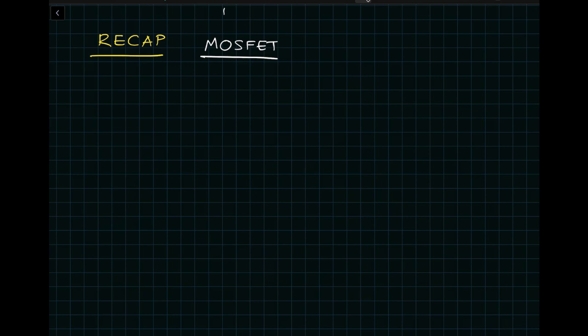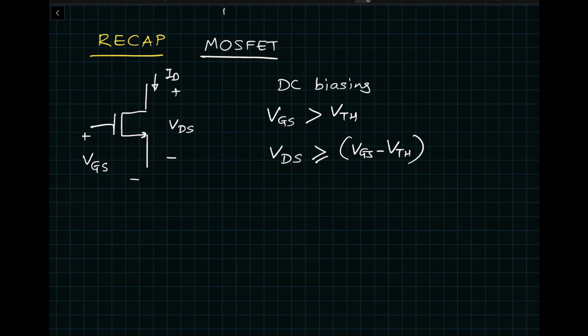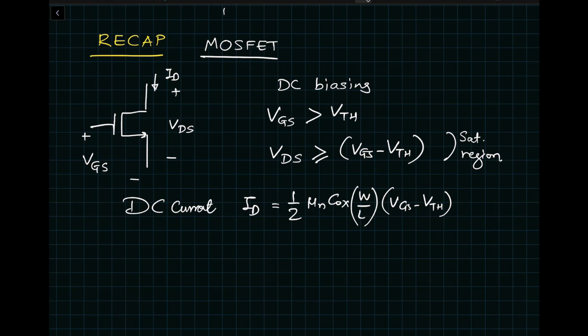A MOSFET transistor can be used as an amplifier when it is in the saturation region. From a DC biasing point of view, VGS must be greater than VTH (the threshold voltage), and VDS must be greater than or equal to VGS minus VTH. The DC drain current ID is given by (1/2) × μn × Cox × (W/L) × (VGS − VTH)². To consider second-order effects due to channel length modulation, we add the factor (1 + λVDS).